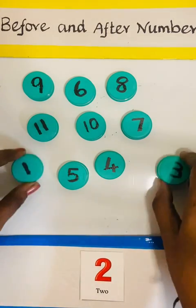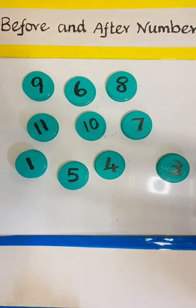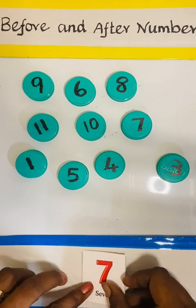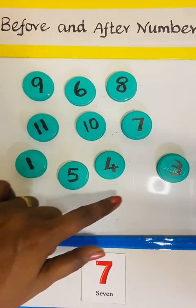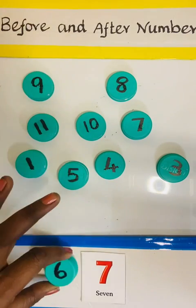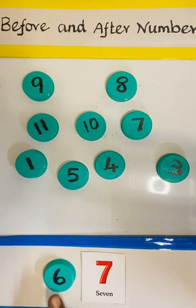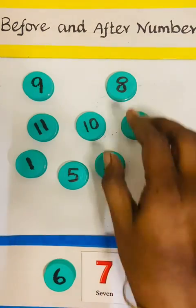So next number, I am going to keep 7. So 7 before number is 6. 7 after number is 6, 7, 8.